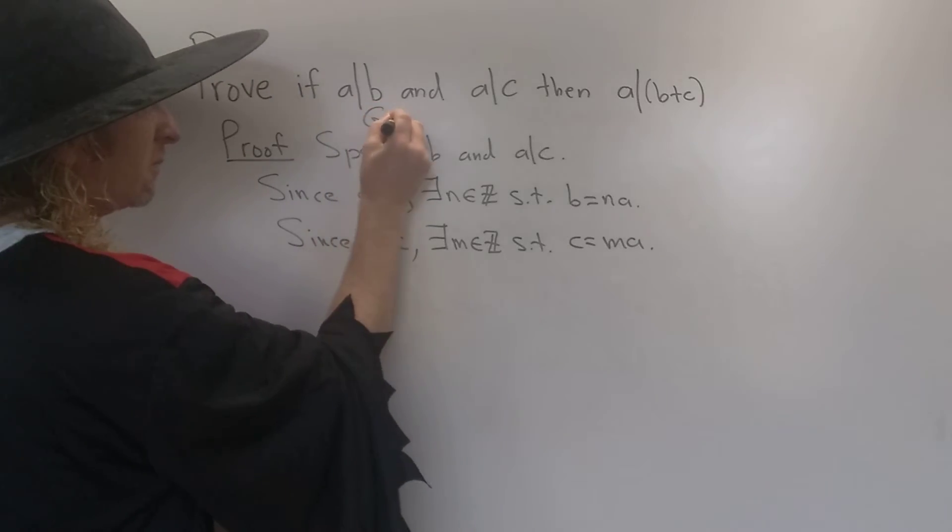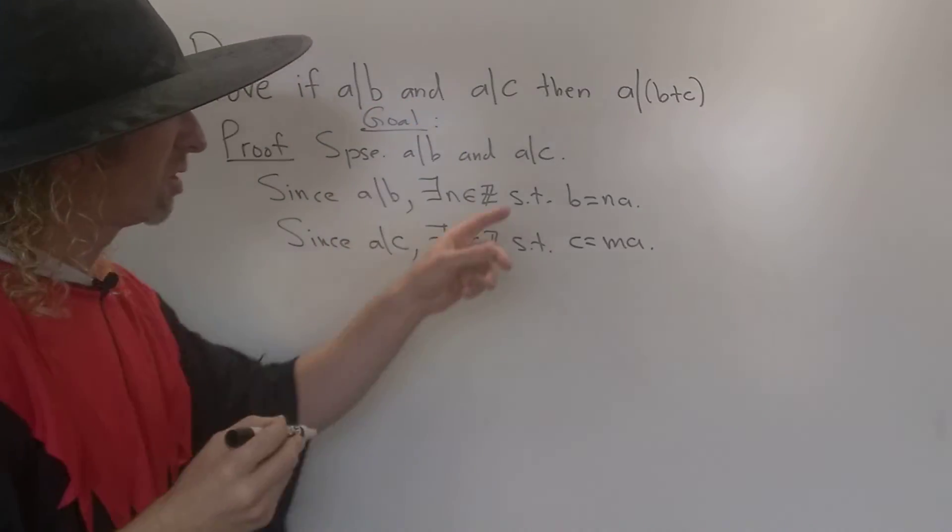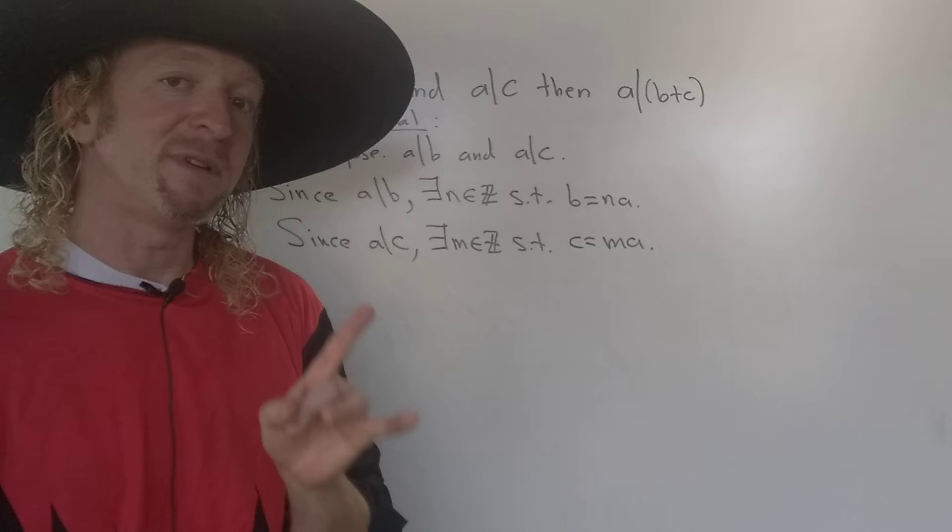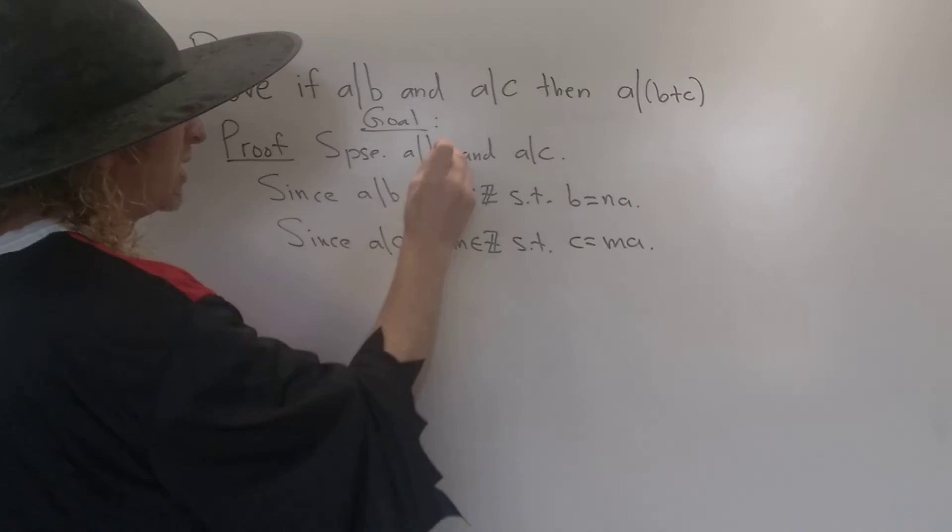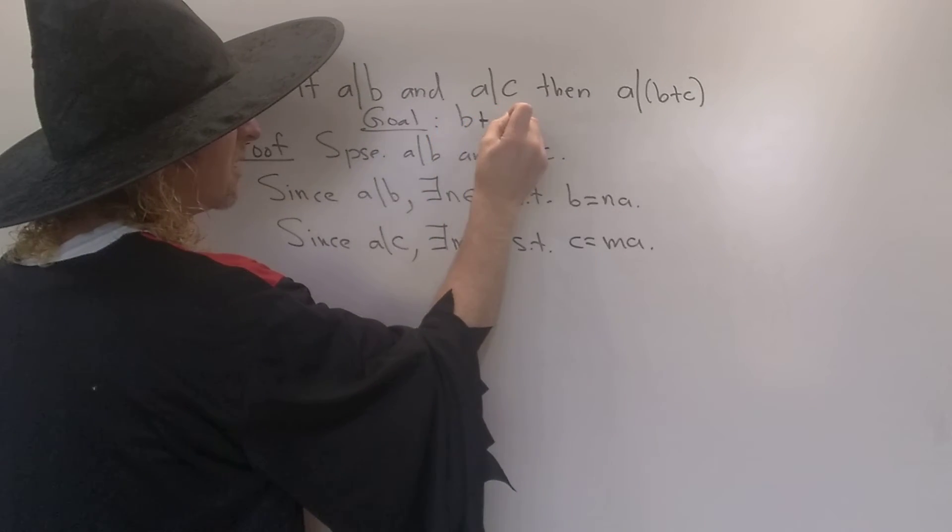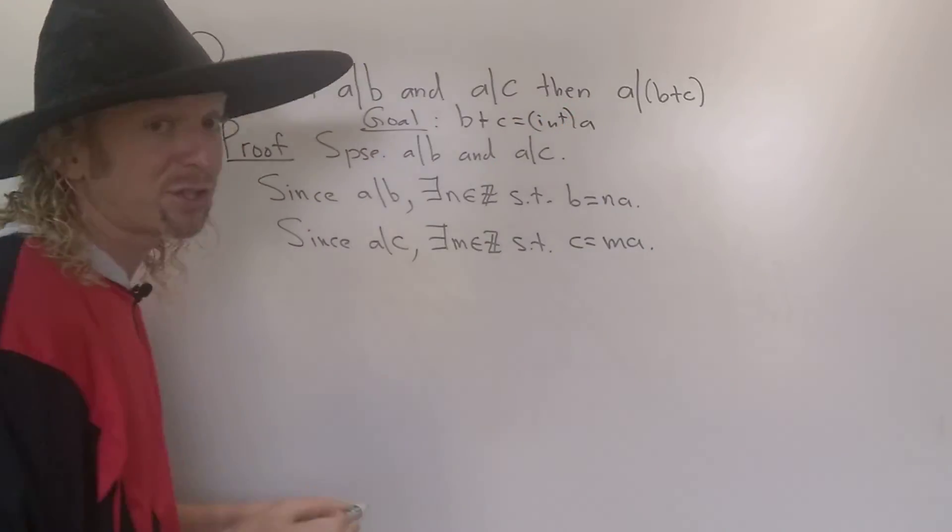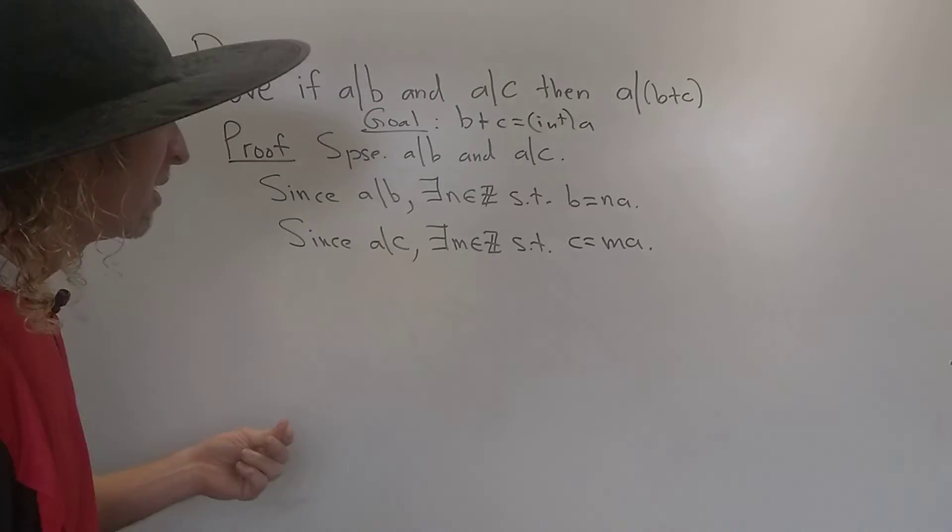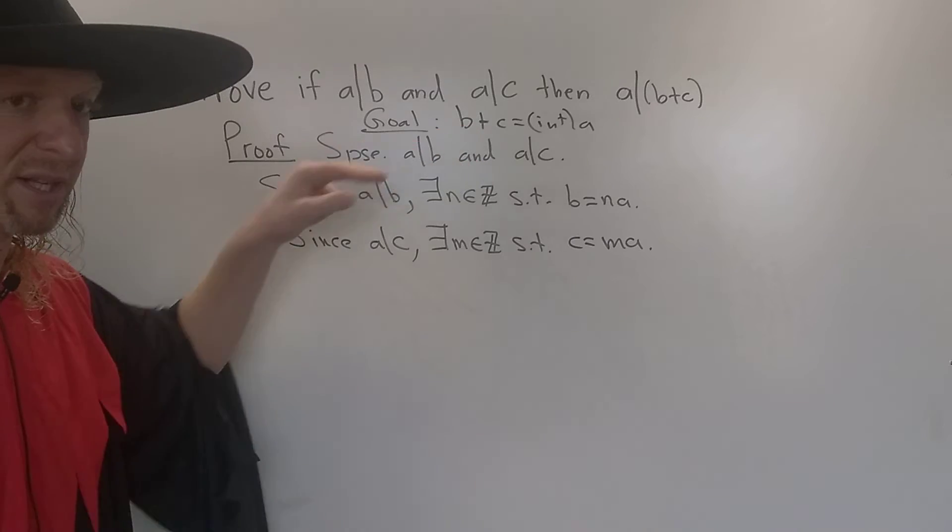So our goal is to show that A divides B plus C. That means B plus C is a multiple of A. So we need to show that B plus C is equal to some integer times A. That's our goal. So the natural thing to do now is to write down B plus C.